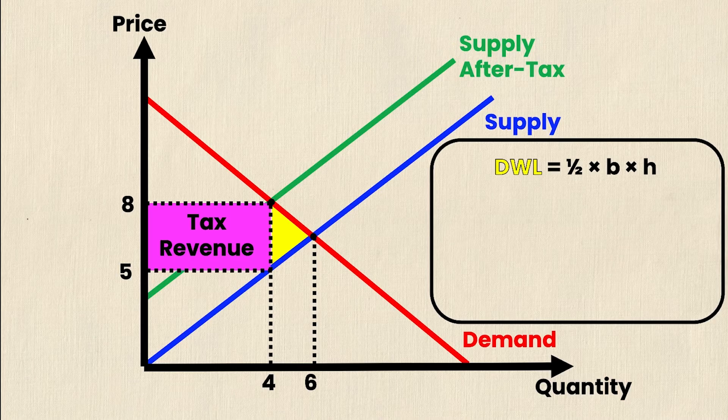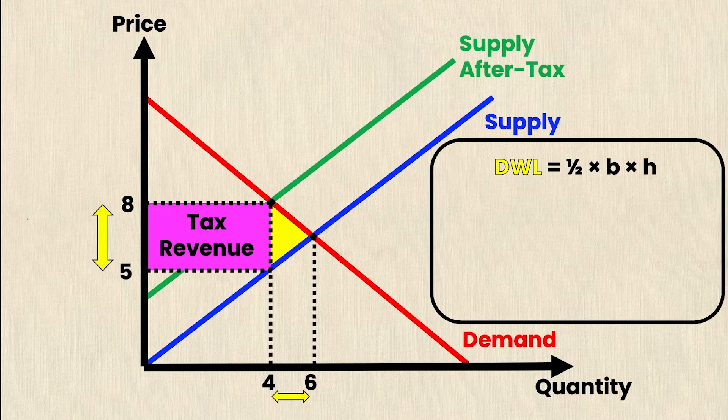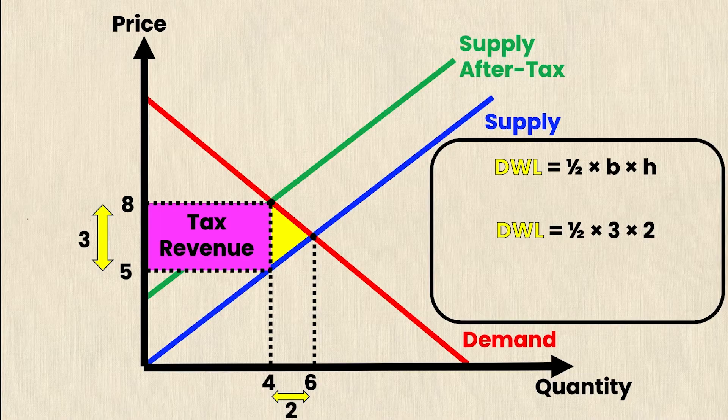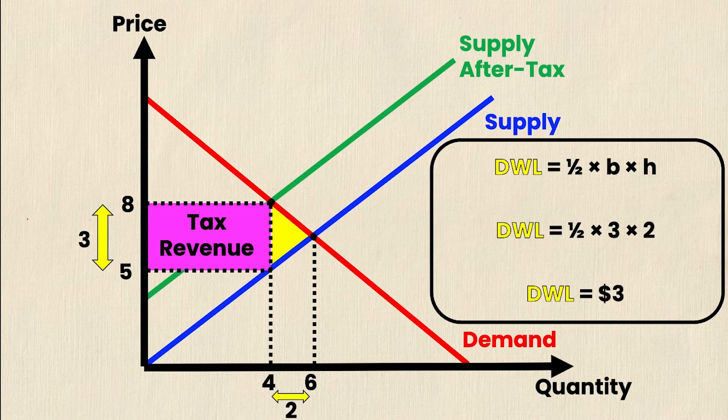So deadweight loss is simply equal to half times base times height, which is the formula for a triangle. And my base and my height are right here. So substituting those in, my deadweight loss is equal to one half times three times two, which obviously is simply $3.